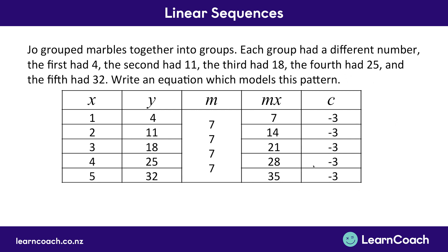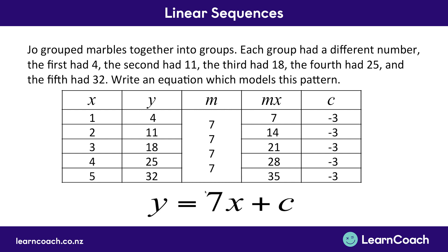We have a C value of negative 3 and an M value of 7. Using Y equals MX plus C, we substitute M as 7 to get Y equals 7X plus C, then substitute C as minus 3, giving us Y equals 7X minus 3. That is our answer — the equation which models the pattern.